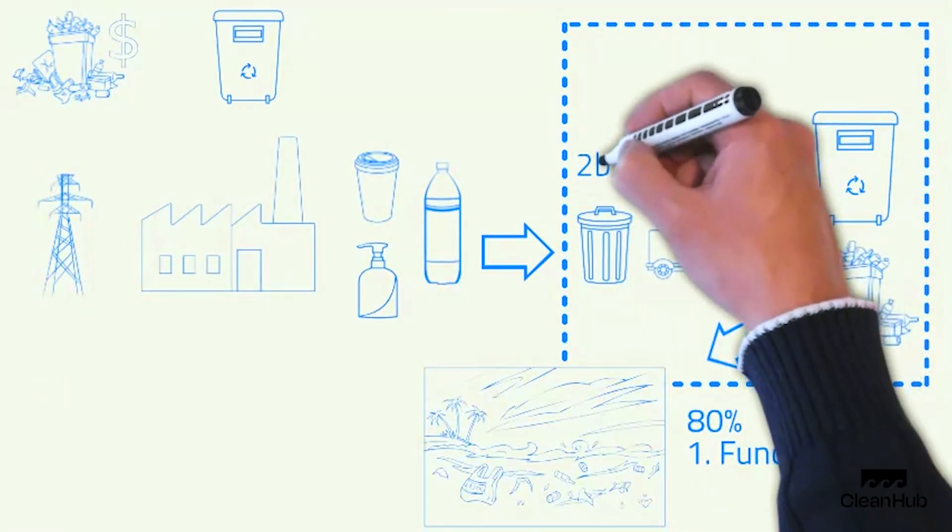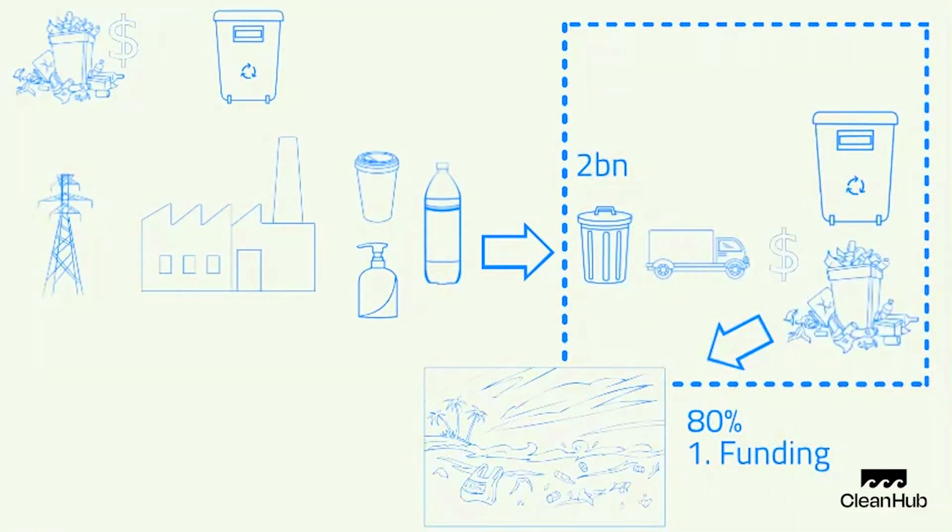Here's the second problem. Two billion people don't have access to the stuff inside this dotted line. They don't have an effective waste management system. This means that non-valuable waste has a high chance of going straight into the environment. This obviously sucks.